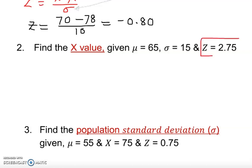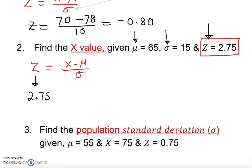Here, a z-score is given right away. We write the formula: z is equal to x minus mean over standard deviation. What is given? The z-score, the standard deviation, and the population mean. So: 2.75 is equal to x — which is unknown — minus the mean of 65, over the standard deviation of 15.